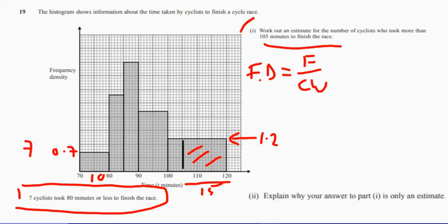So now we can answer our question because the frequency density is 1.2 and the class width is 15. So if I rearrange this, the frequency equals class width multiplied by frequency density.